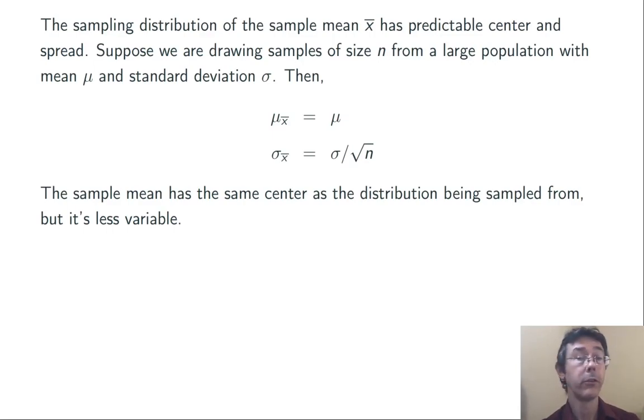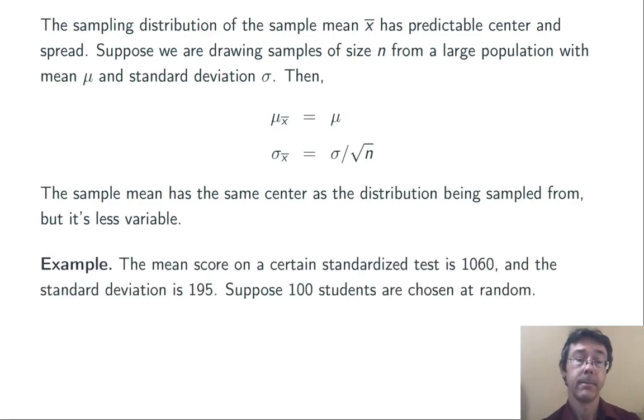If the population is large, however, it doesn't particularly make a difference to the probabilities whether you do it with replacement or without replacement. Here's a full example. The mean score in a standardized test is 1060, and the standard deviation is 195.